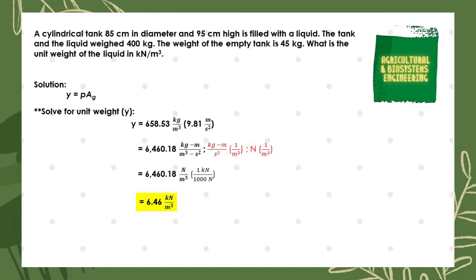Having now 658.53 kilograms per cubic meter for our density multiplied by the acceleration due to gravity of 9.81 meters per square second, we get the product and we now have 6460.18 kilogram-meter per cubic meter per square second.